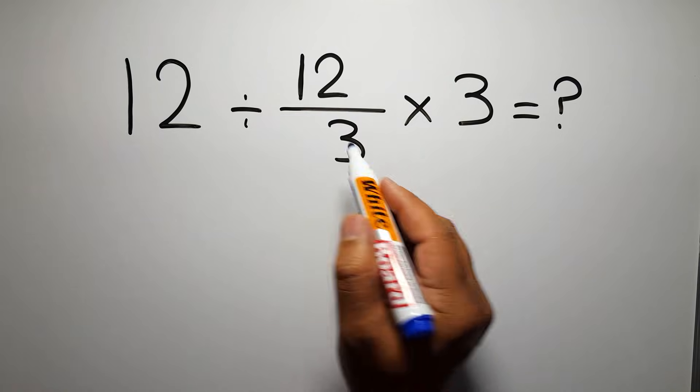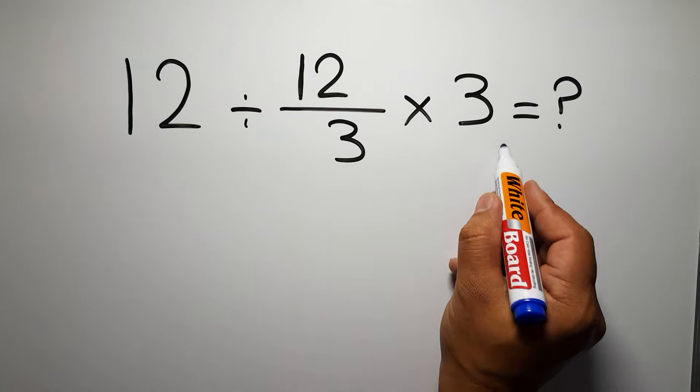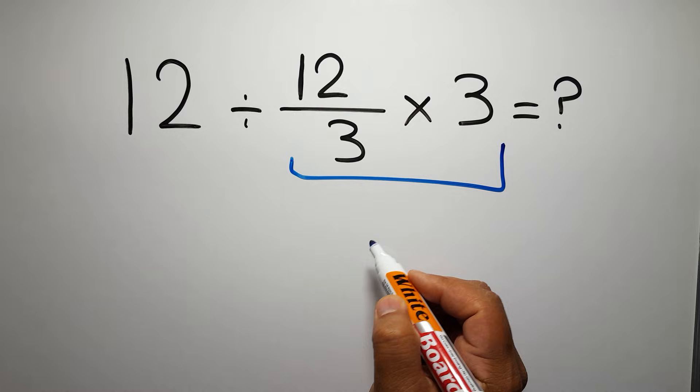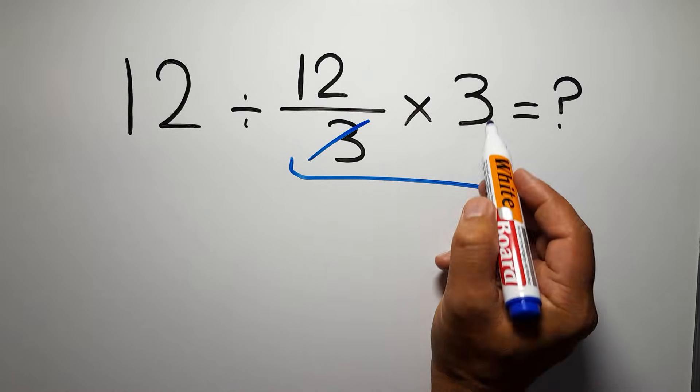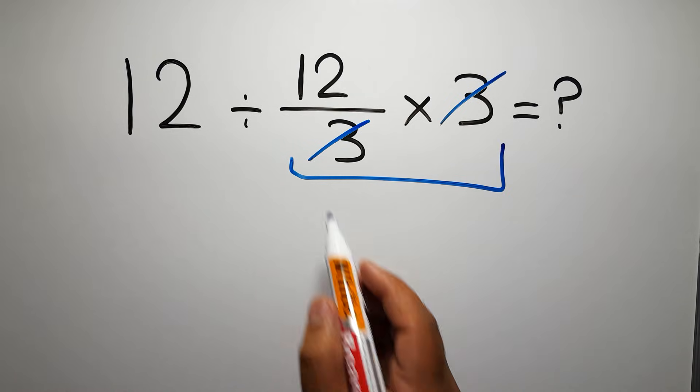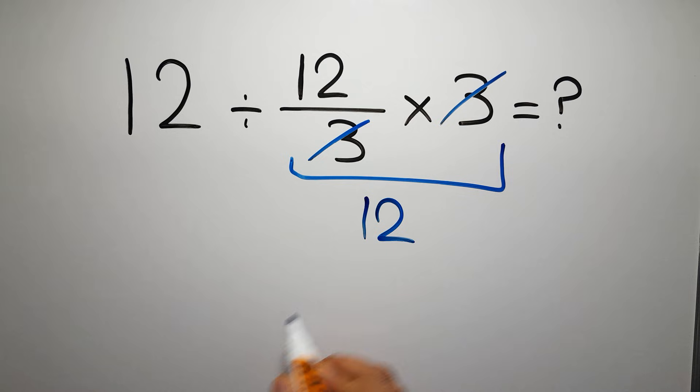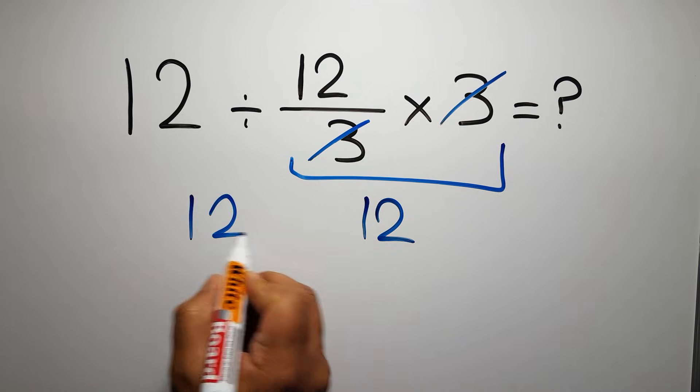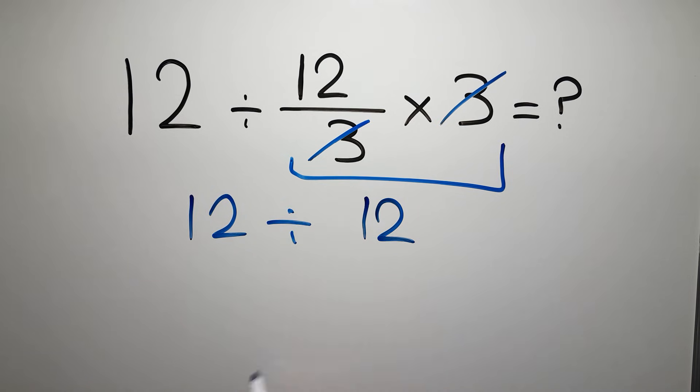First, we do this multiplication, 12 over 3 times 3. We can easily cancel this 3 and this 3, so we have just 12 and 12 divided by this 12, which equals 1.